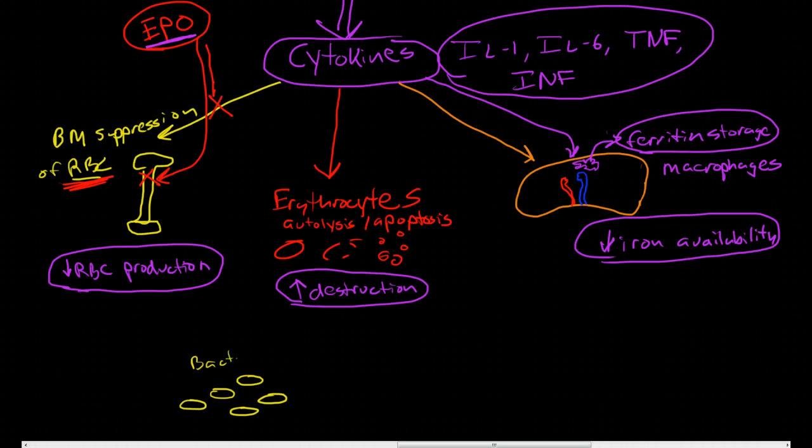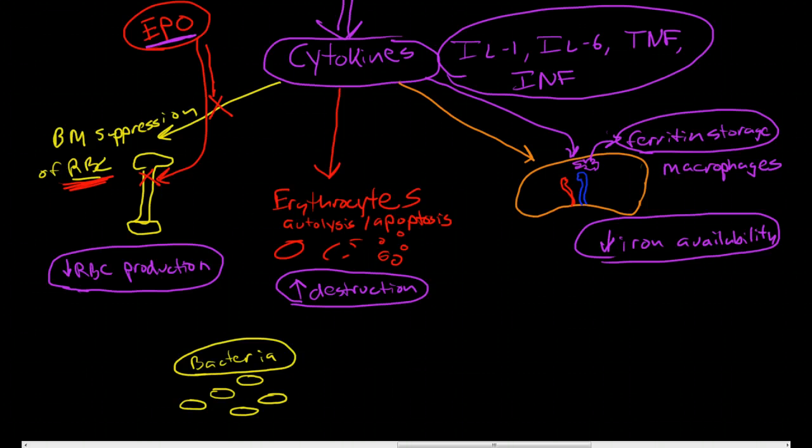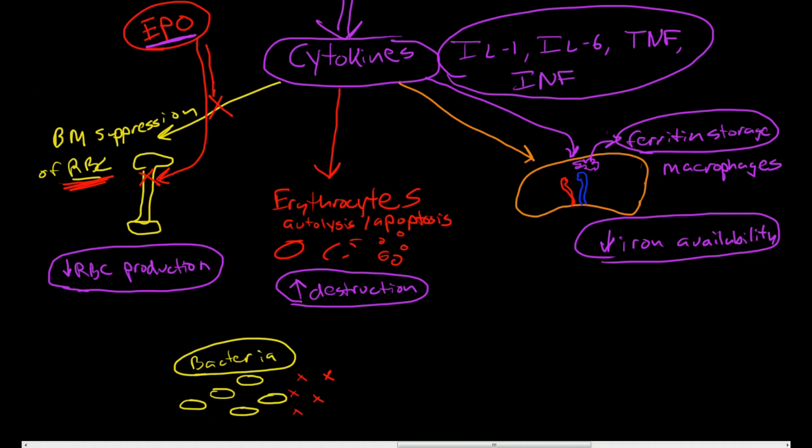Now in order for bacteria to survive and thrive, the bacteria need lots of iron. We need iron for oxygen carrying capacity, however, recognize that we have a lot of excess capacity. We don't need a hematocrit of 50% to survive.